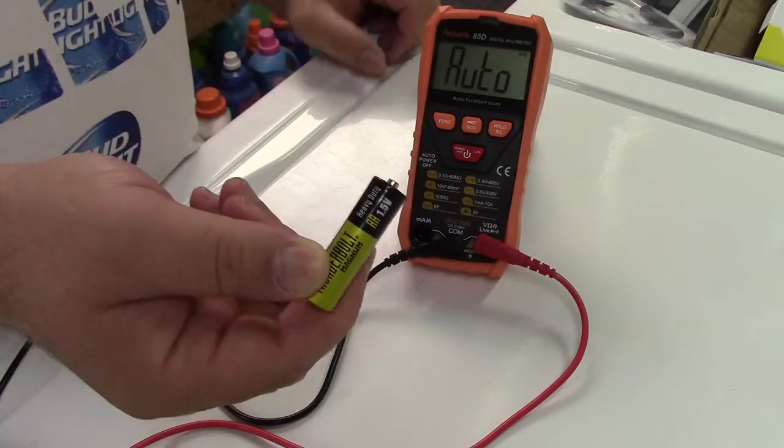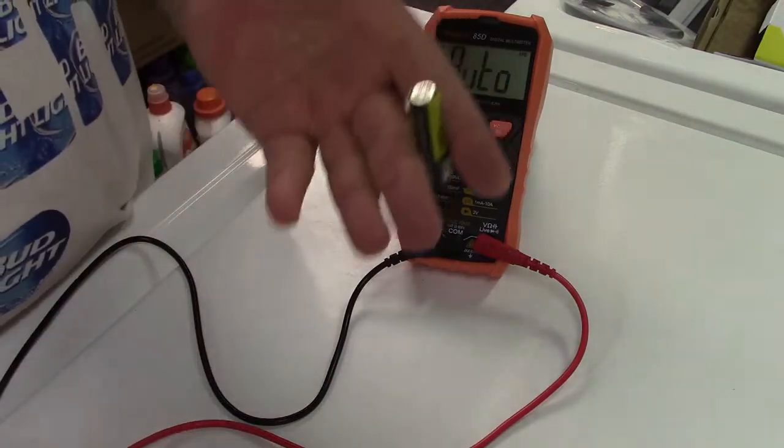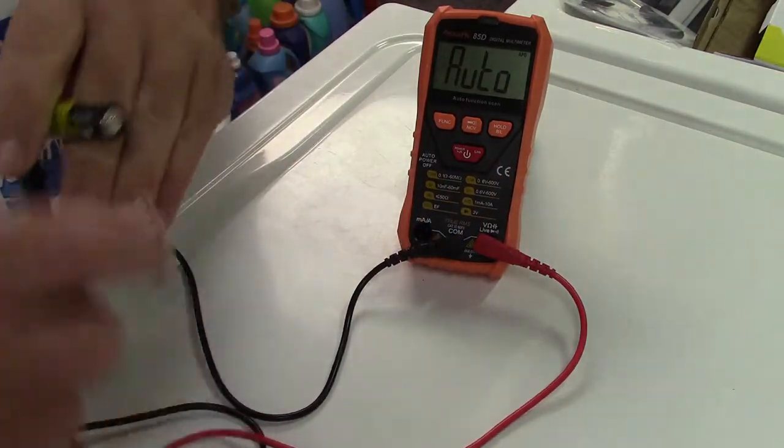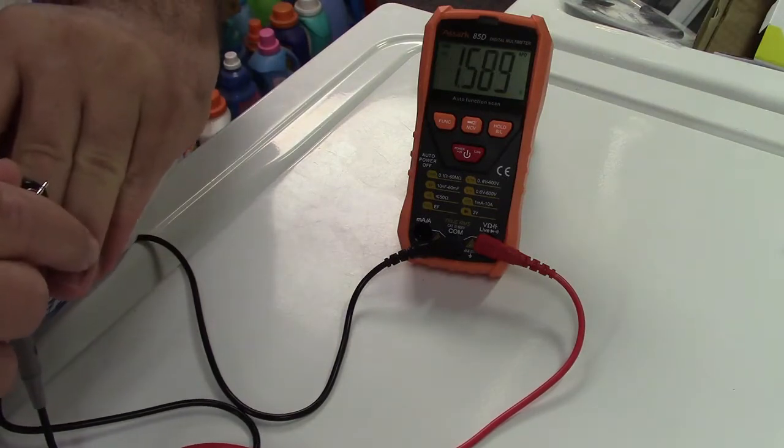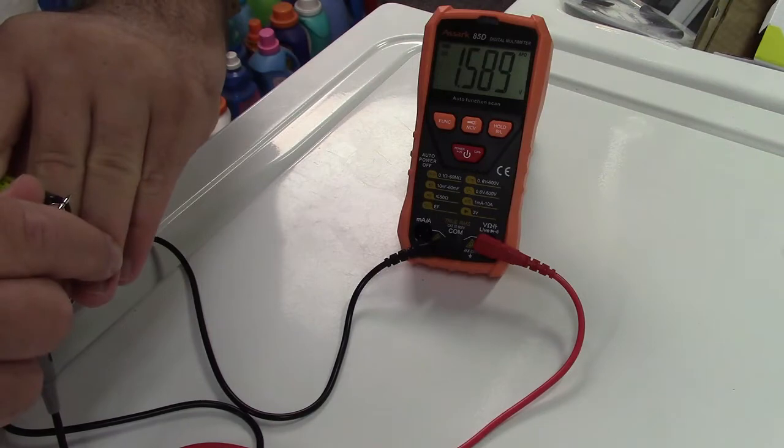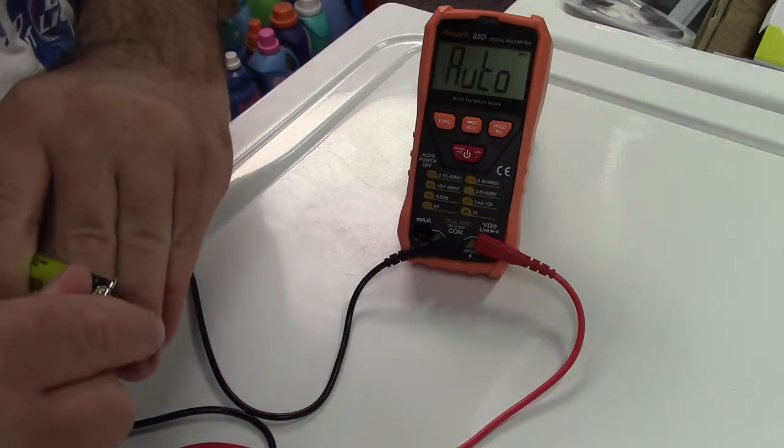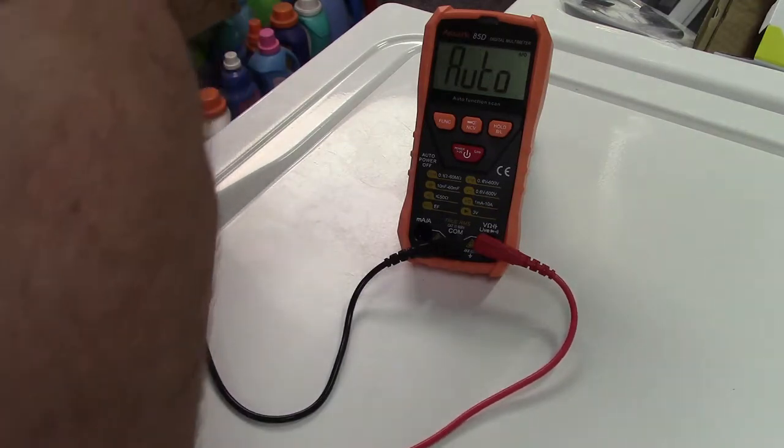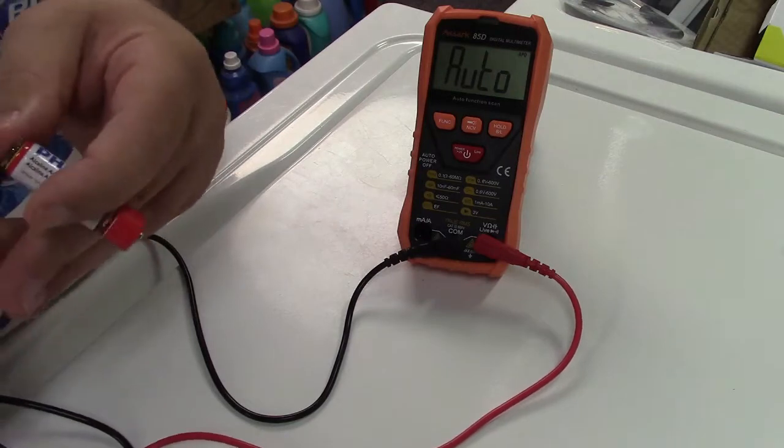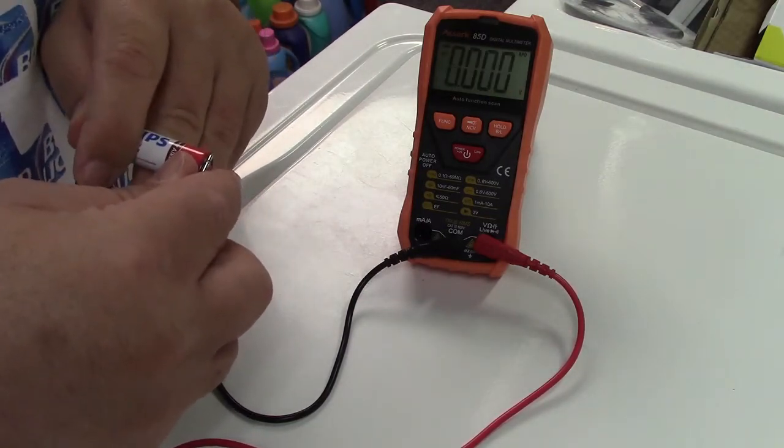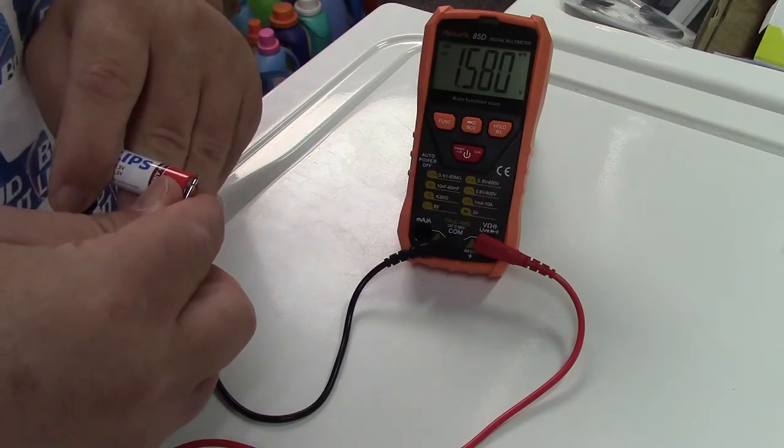Here's a double A battery 1.5 volts DC. I don't know what the status of this battery is. We're going to find out. We'll put the negative and the positive on there. You'll notice it said auto before, and it has now changed to the reading, which is 1.58, 9, 8, 9, right there. I have another battery here. Let's try that one. See what that reads. 1.580.